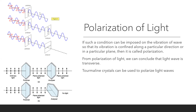Such waves are called polarized waves. To check whether a wave is polarized, we can use another slit called the analyzer. The first slit is called the polarizer because it polarizes the wave; the second is called the analyzer because it analyzes whether the wave is polarized or not. If the slit in the analyzer is parallel to that in the polarizer, the wave will pass through. If the analyzer slit is perpendicular to the polarizer slit, the wave will not come out. This helps us identify whether the wave is polarized or not.